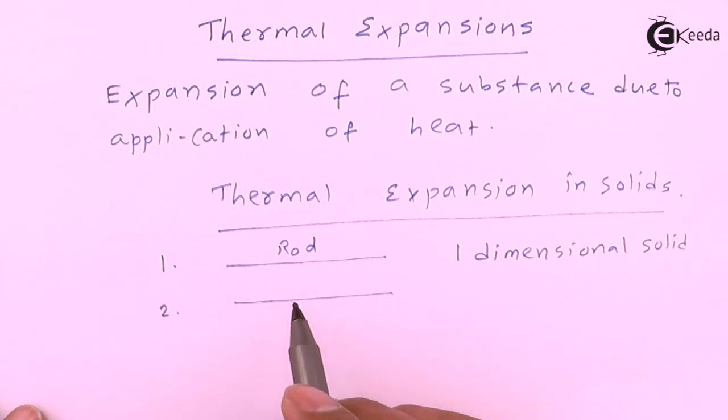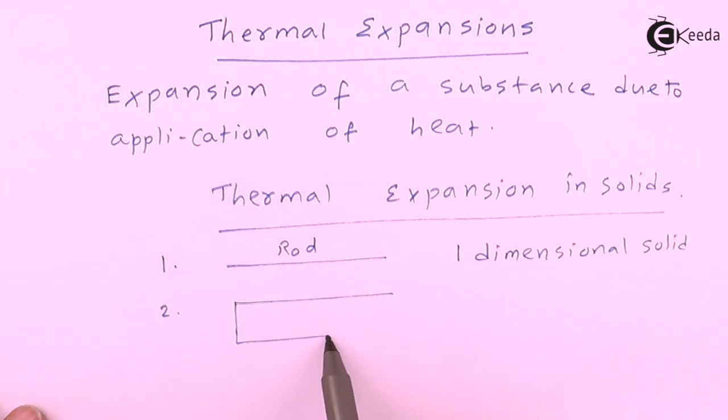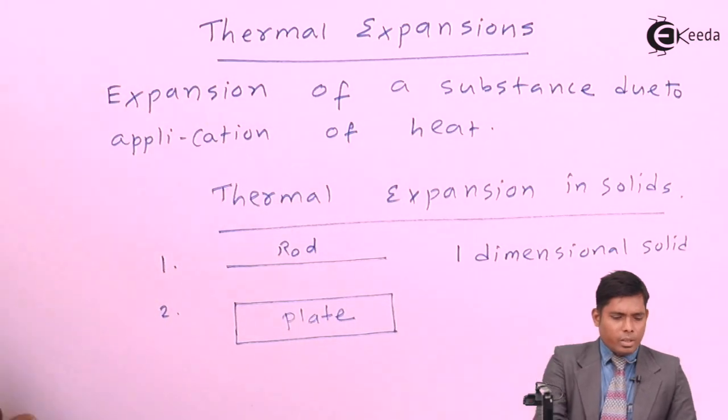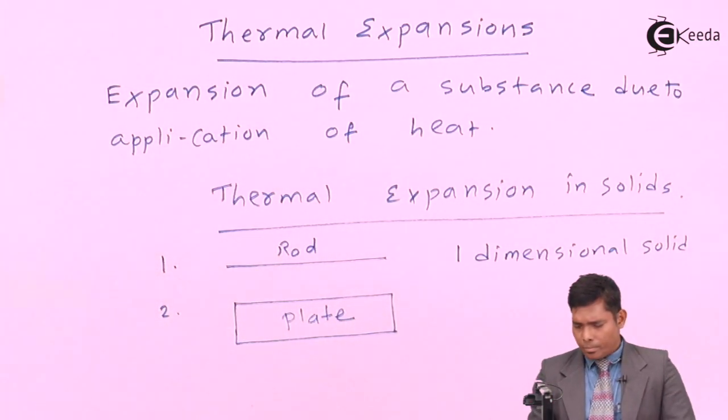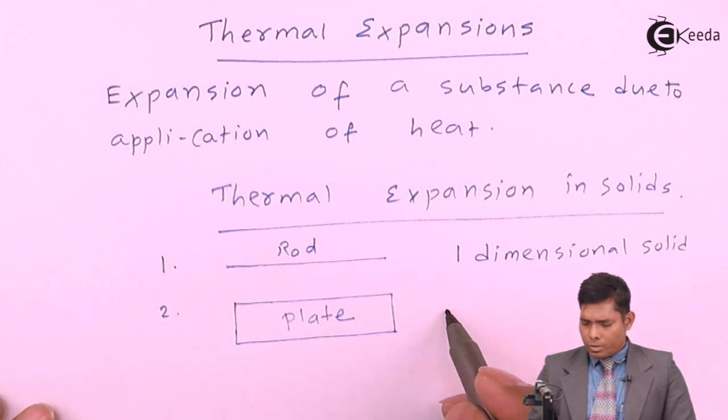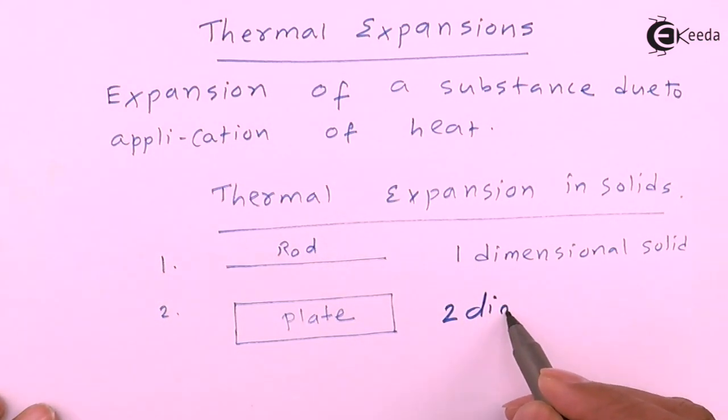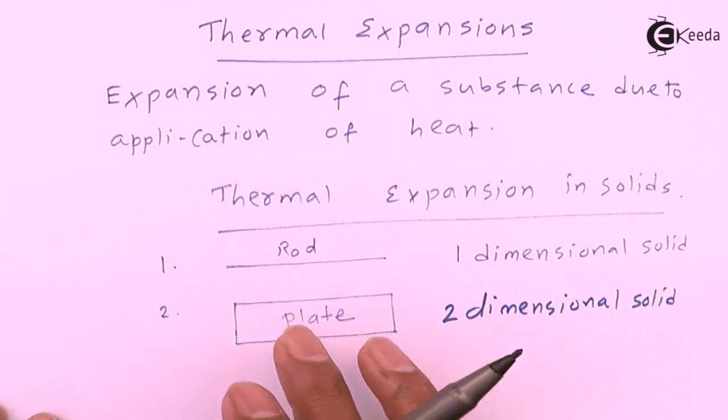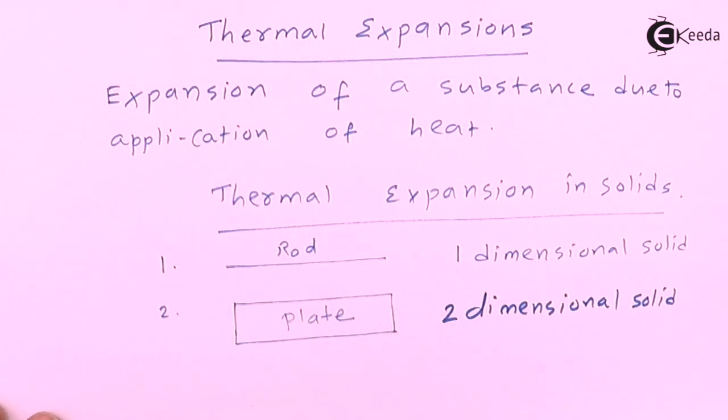Second is, if you think of a square plate or any plate. In case of a plate, this is a two dimensional solid, because it has length as well as breadth, so it is two dimensions. To define this, if you measure both length and breadth, it is two dimensional solid.